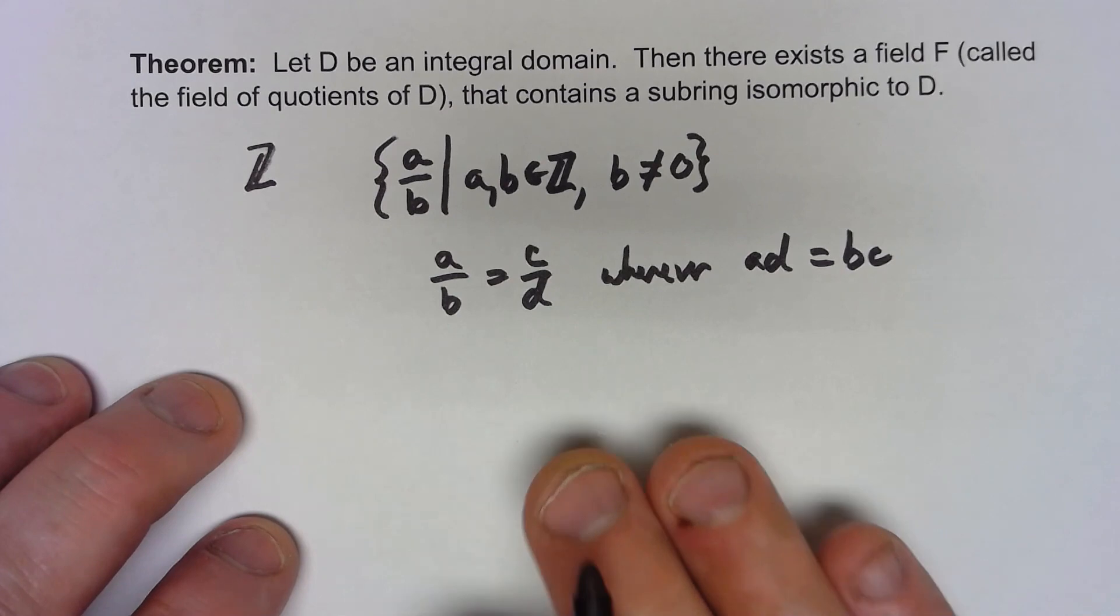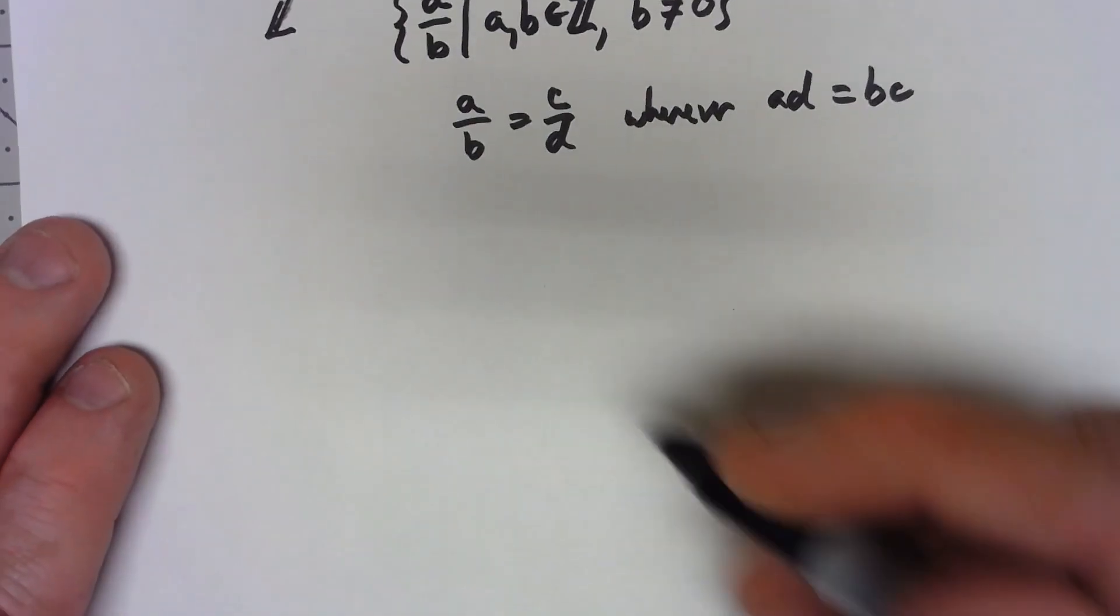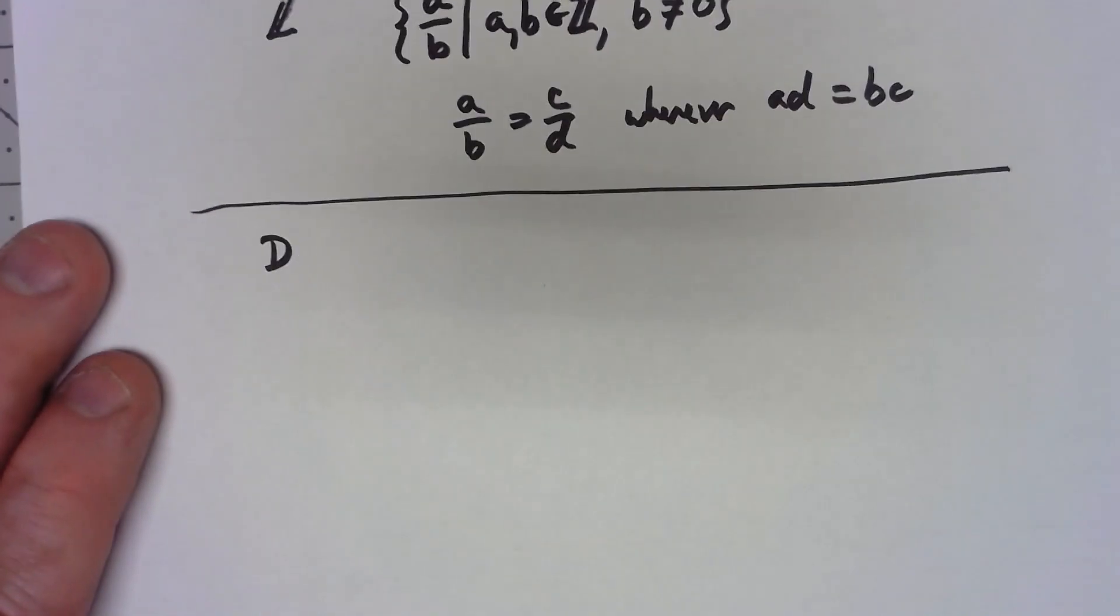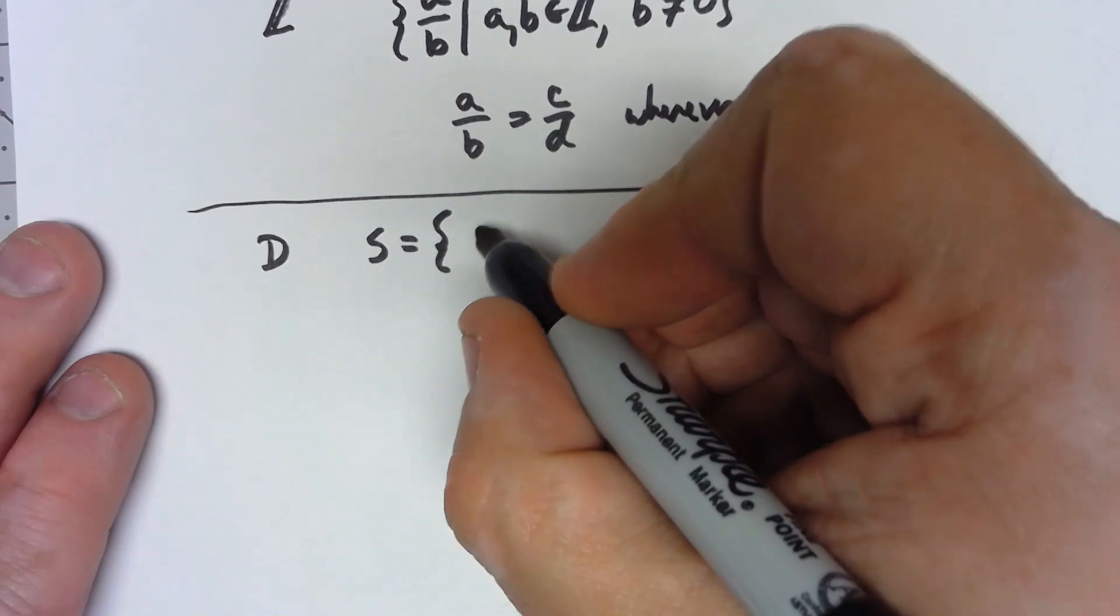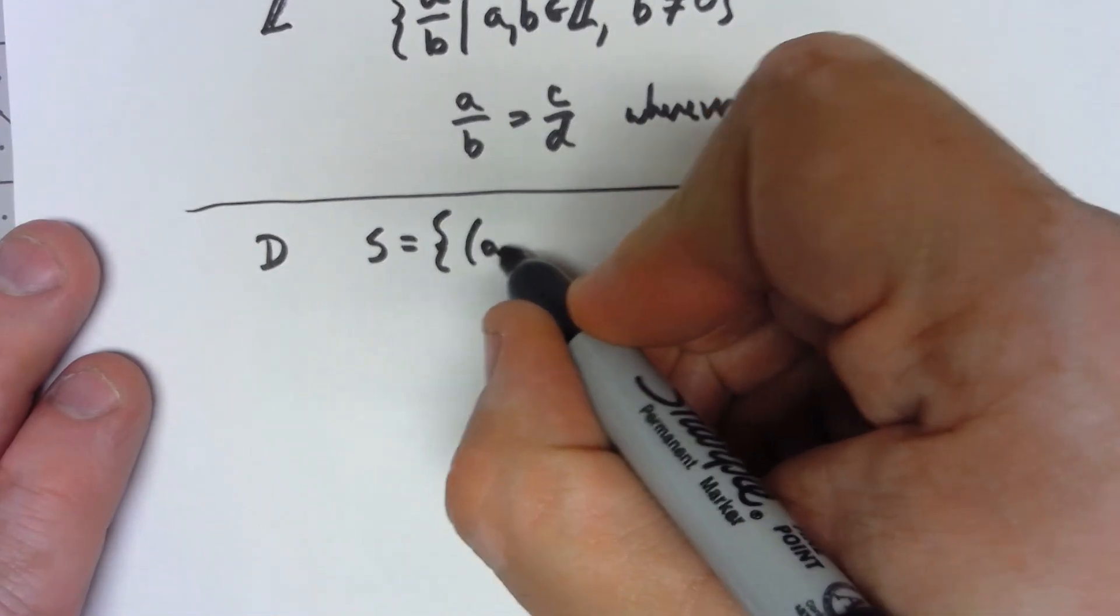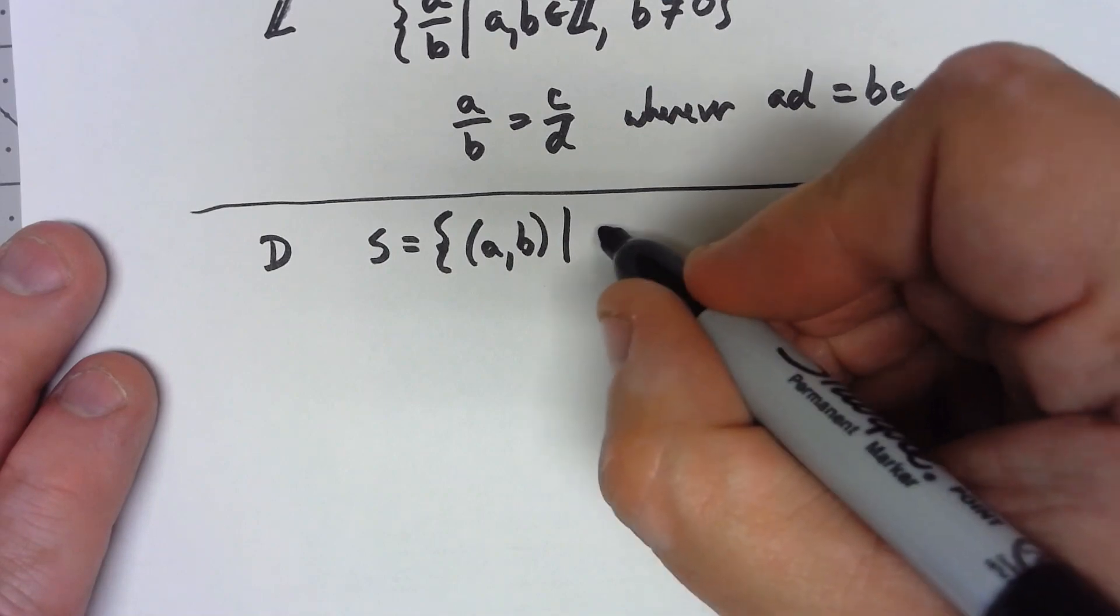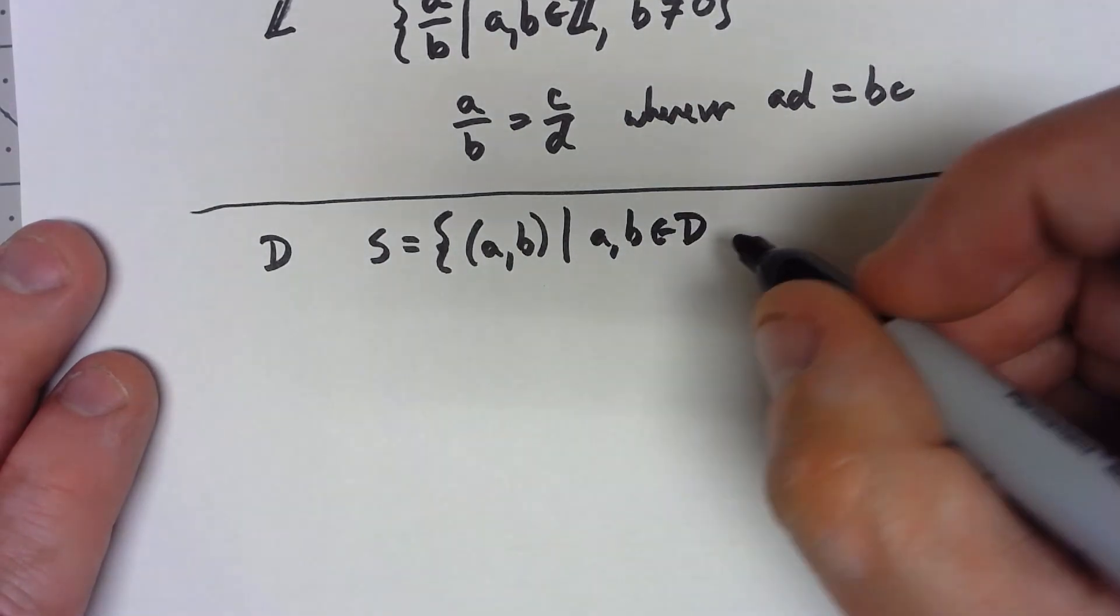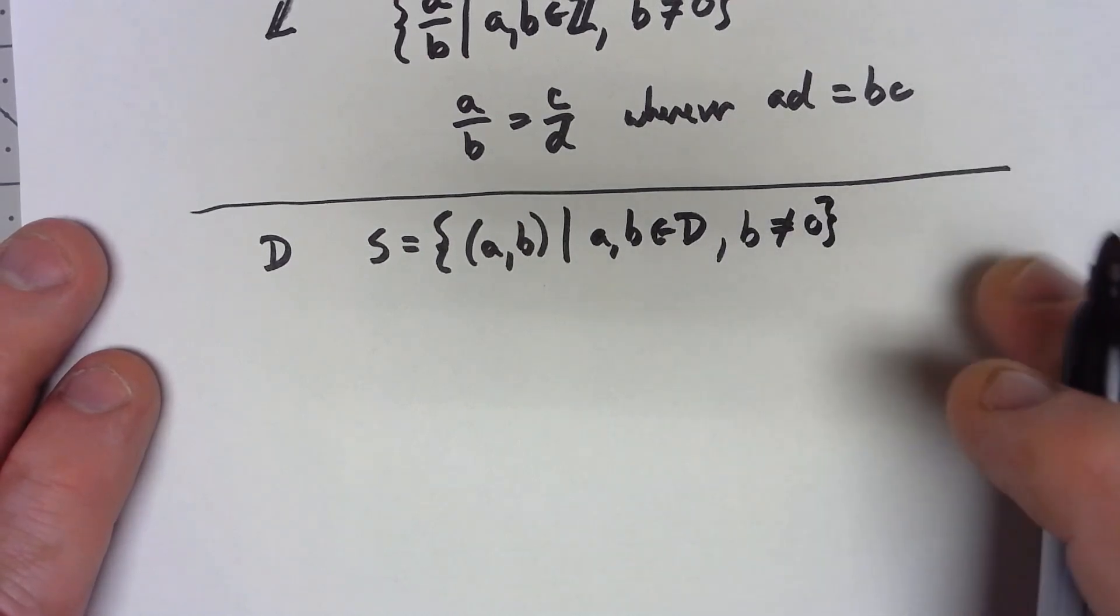We're going to basically do the exact same thing, only in general we're going to start with a ring. So we start with our integral domain and we're going to go ahead and say S is the set of all ordered pairs a and b such that a and b are in our integral domain D and b is not the zero of that integral domain.